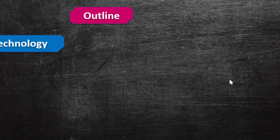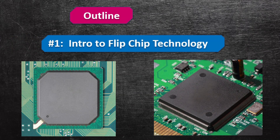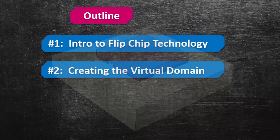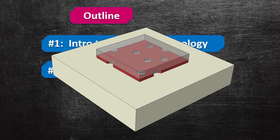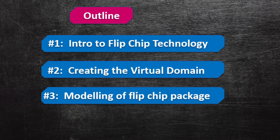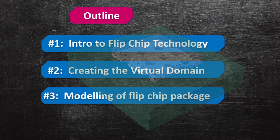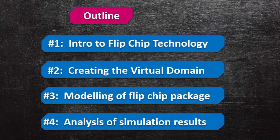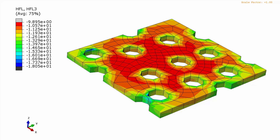The outline for this video includes: first, I want to introduce the concept of flip chip technology, because this is really important and at the core of what we are trying to do today. Then I want to show you how to create the virtual domain within Abacus. After that, we'll look at how to set up the model to run, and finally we'll analyze the simulation results.